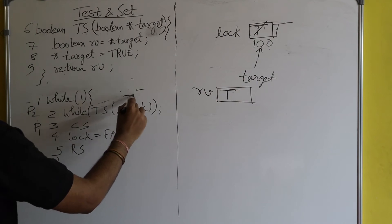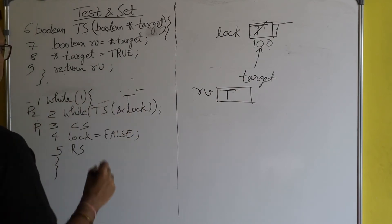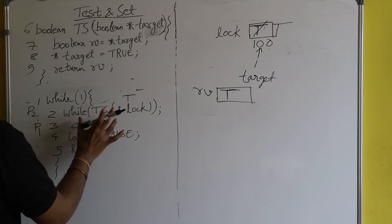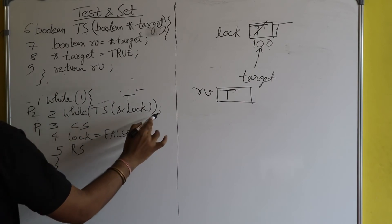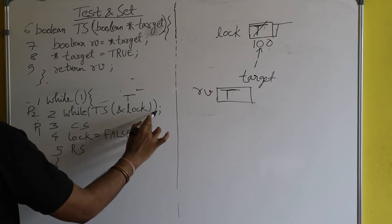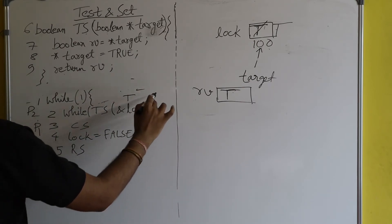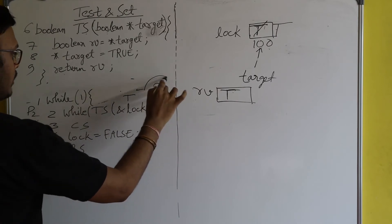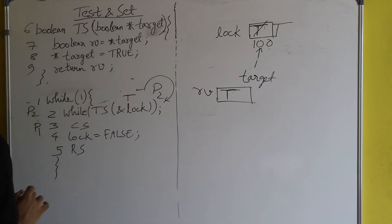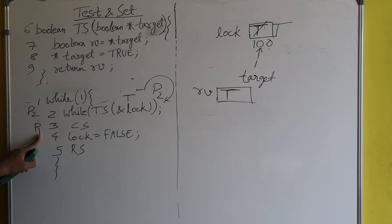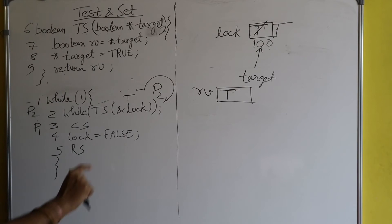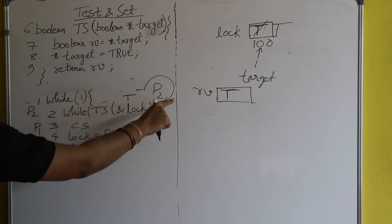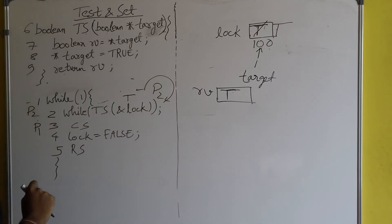True is returned, meaning the while loop is not broken. The semicolon executes and P2 gets trapped in the while loop. Process P1 is inside the critical section but P2 cannot enter — P2 is trapped in the while loop.